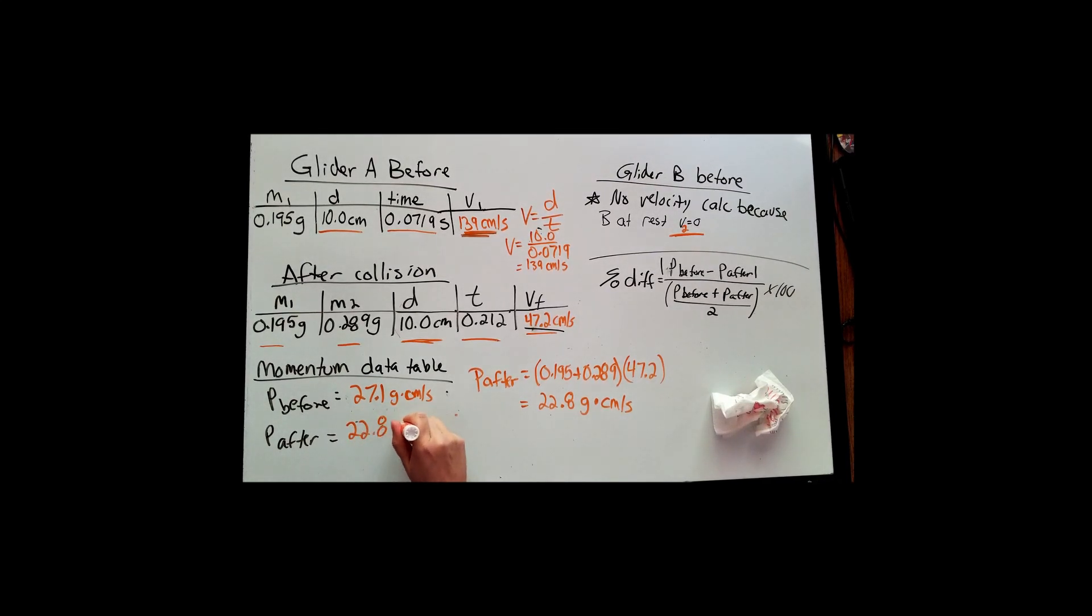I'm just going to erase this equation, put my answer over for my after. And they're very close to each other. I mean, they're off by a little bit, 22 versus 27. But they're within the same range. And to figure out just how close they are to each other, we're going to calculate percent difference. Now, this is not a calculation we have done before in lab. It is not the same as percent error.